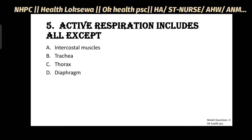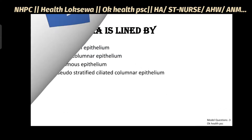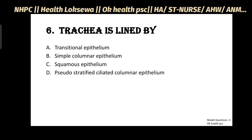Question No.5: Active respiration includes all except - Intercostal Muscles, Trachea, Thorax, Diaphragm. Answer: B - Trachea.